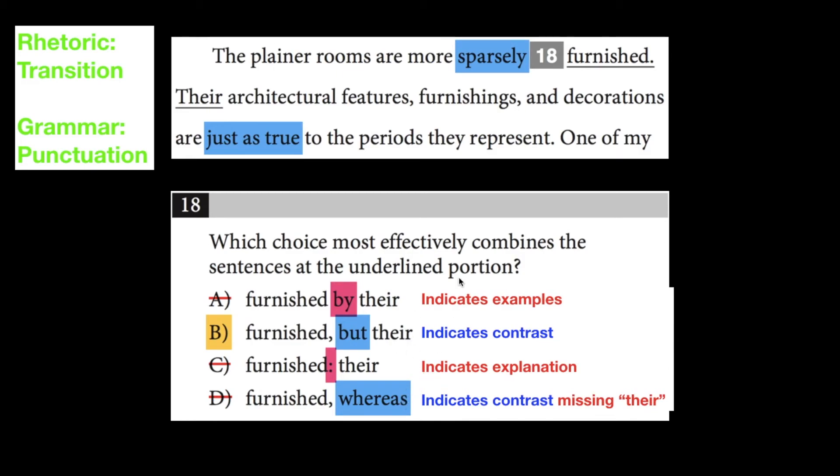If you tried to read this without there, it would be the planar rooms are more sparsely furnished, whereas architecture features furnishings and decorations are just as true. Without the word there, then it becomes a dependent clause that you need. It becomes just difficult to read. That's not correct.